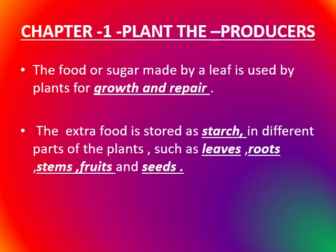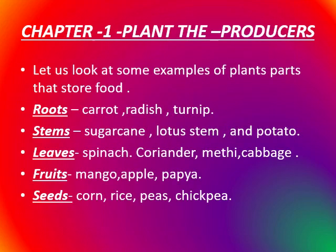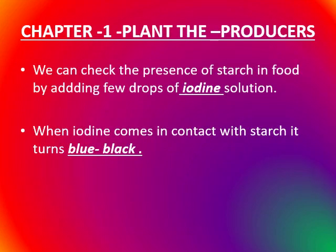The extra food is stored as starch in different parts of the plant such as leaves, roots, stems, fruits and seeds. We can check the presence of starch in food by adding a few drops of iodine solution. When iodine comes in contact with starch, it turns blue-black.